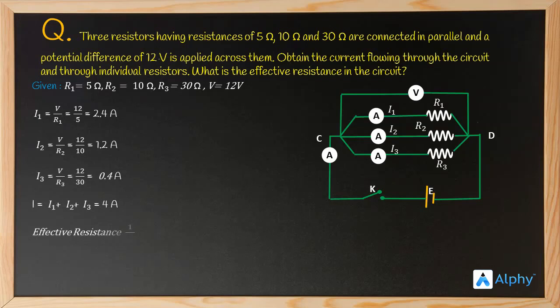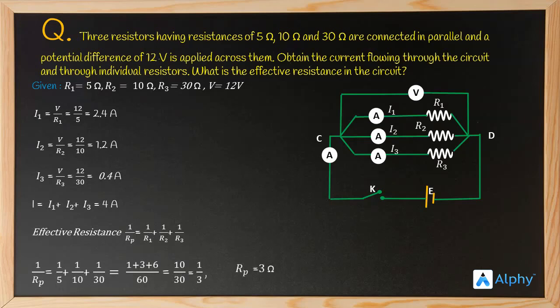Next, we find the effective resistance. With three resistors in parallel: 1 by Rp equals 1 by R1 plus 1 by R2 plus 1 by R3, which gives 1 by 5 plus 1 by 10 plus 1 by 30. Solving this, the effective resistance Rp equals 3 ohms.